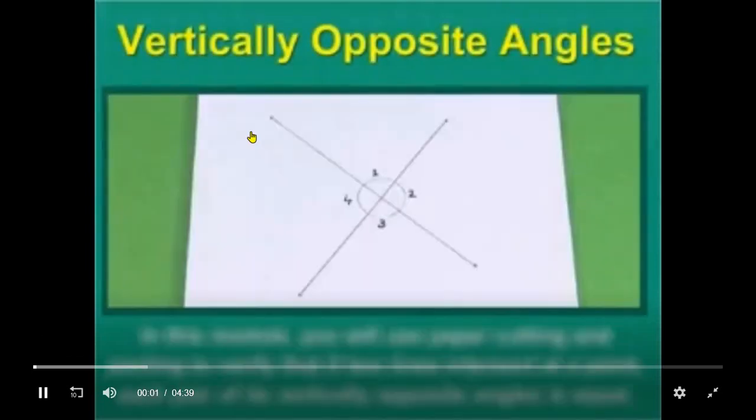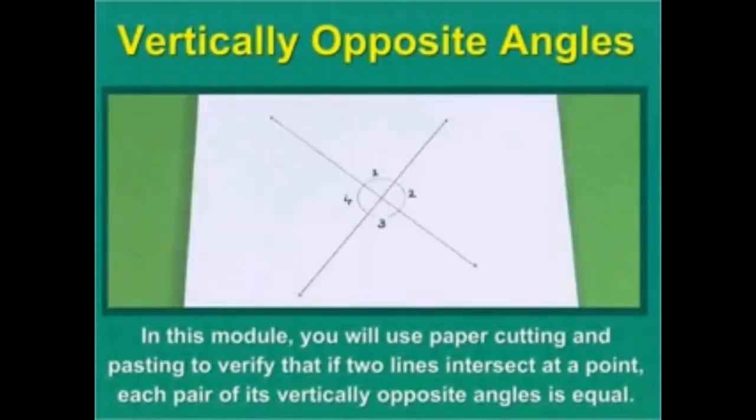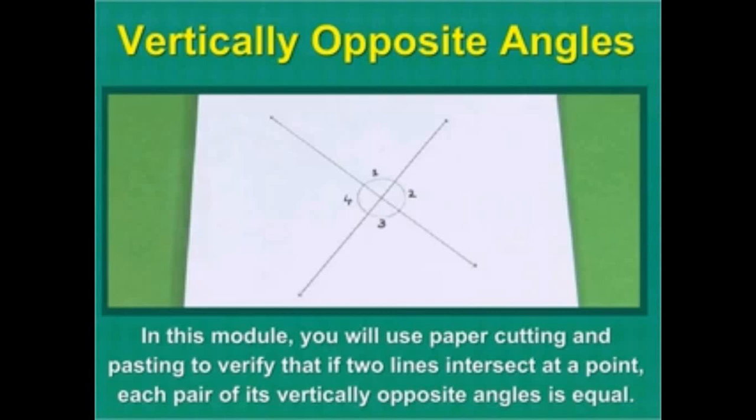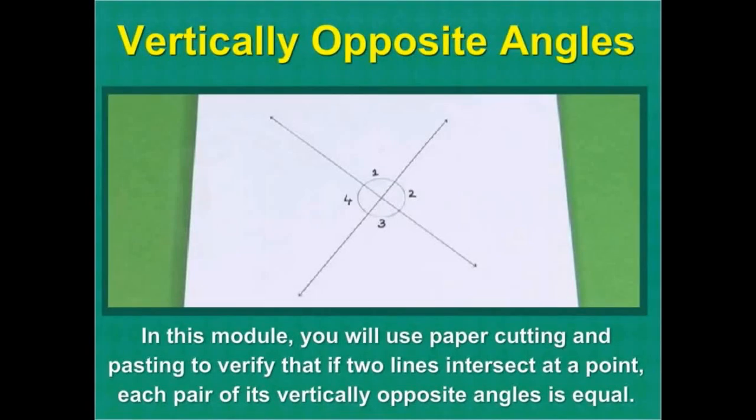Vertically Opposite Angles. In this module, you will use paper cutting and pasting to verify that if two lines intersect at a point, each pair of its vertically opposite angles is equal.